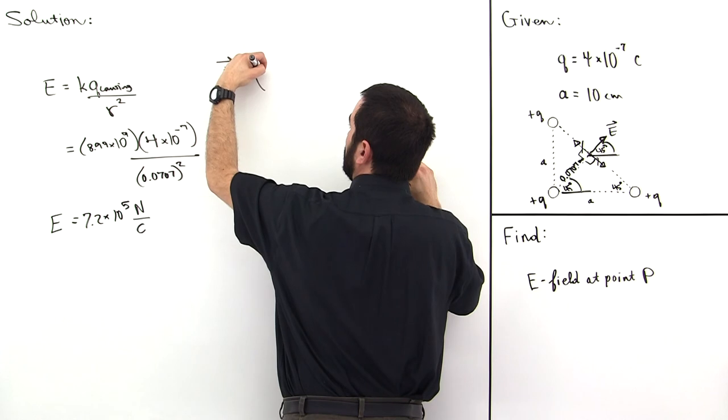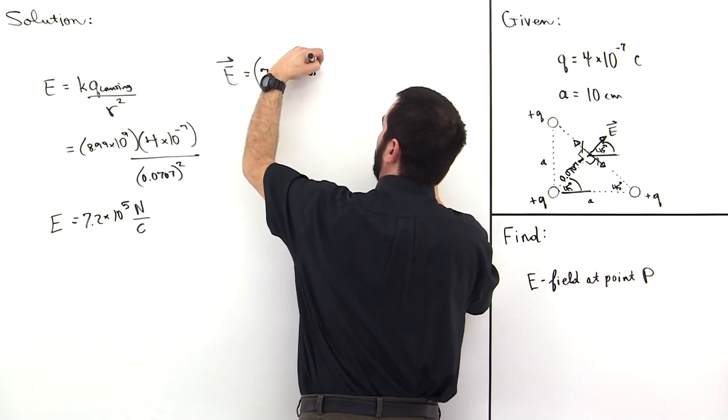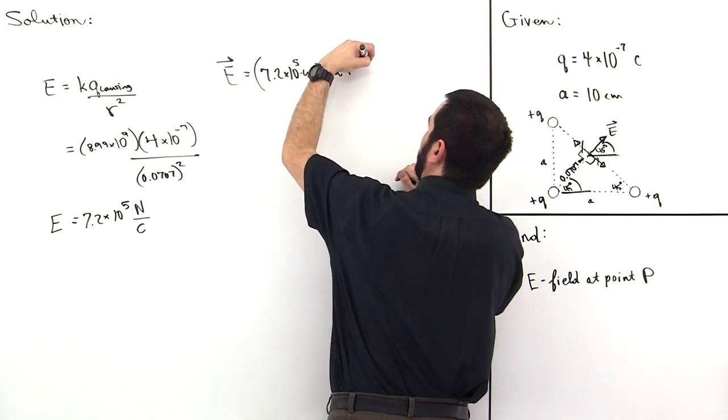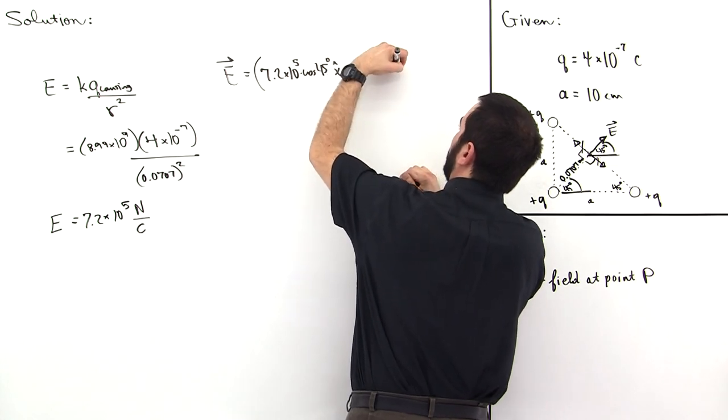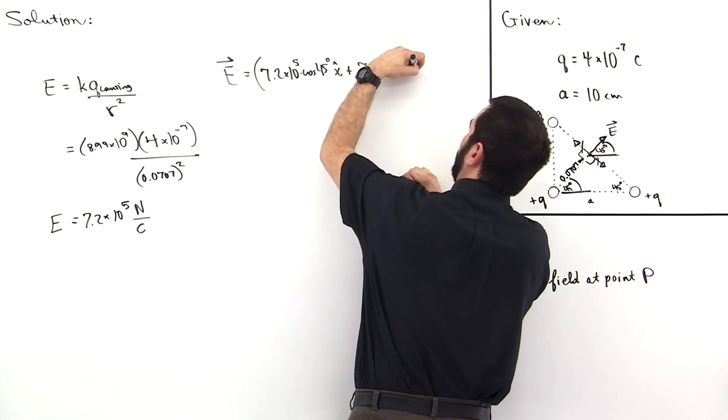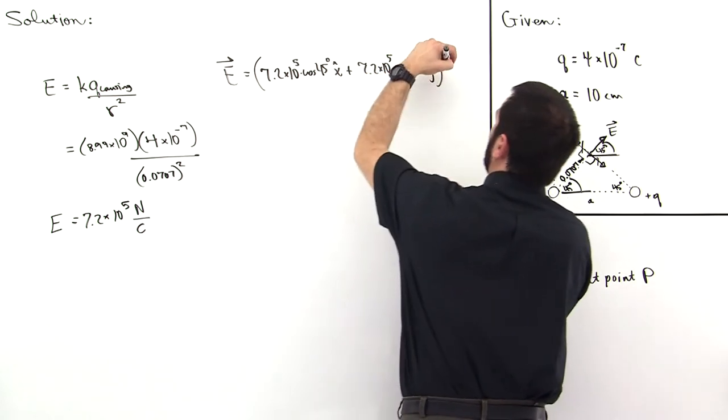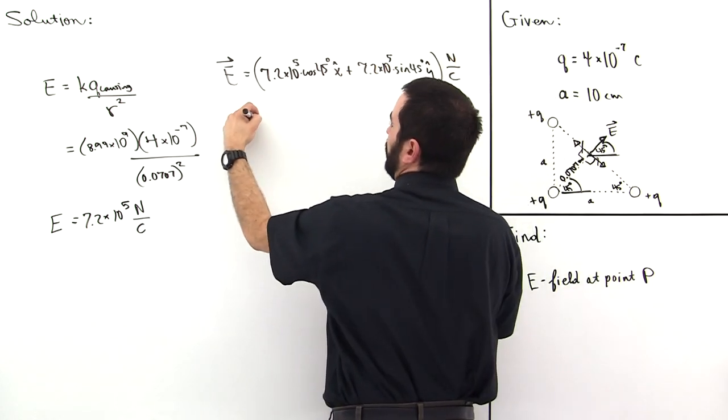So this is 7.2 times 10 to the fifth times the cosine of 45 degrees x hat, and the units of that are newtons per coulomb.